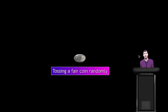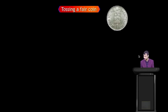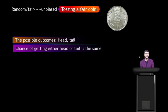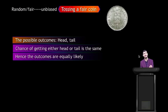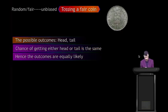Tossing a fair coin randomly — there are two possible outcomes: head and tail. Since the coin is fair and unbiased, the chance of getting either head or tail is the same. Hence the outcomes are equally likely — chance of getting either head or tail is the same.